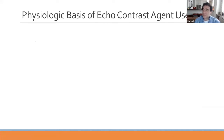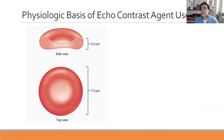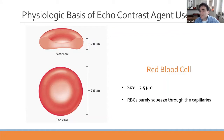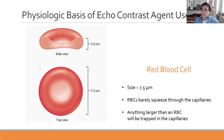What's the physiologic basis for echocontrast agent use? The primary determinant is the size of the capillaries, and we can judge the size of capillaries by the size of the red blood cells. Red blood cells are roughly 7.5 micrometers in diameter and barely squeeze through the capillaries. Anything larger than red blood cells will be trapped in the capillaries, and in the case of intravenous injection, will be trapped in the lungs and never pass into systemic circulation.